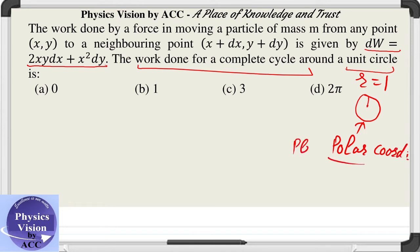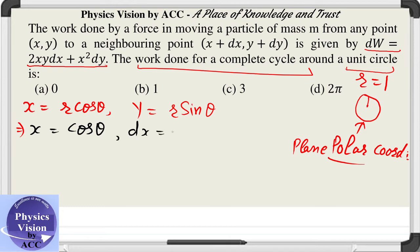In case of circle it is better to use plane polar coordinates which are given by x = r cos θ and y = r sin θ. Here r is given to be 1, that means we can write x = cos θ, which gives us dx = -sin θ dθ. And y is sin θ, so dy = cos θ dθ.